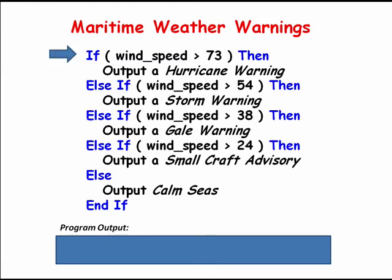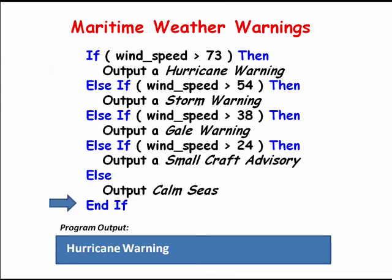Consider the case where wind speed was 78 miles per hour. This wind speed would indicate a hurricane warning using this algorithm. Upon execution of this cascading if statement, the first condition would in fact be true — 78 is greater than 73. At this point, our algorithm would output a hurricane warning and it would skip the remaining conditions. As soon as the cascading if finds a condition that is true, the remaining conditions are skipped and execution falls down to the end of the cascading if statement.